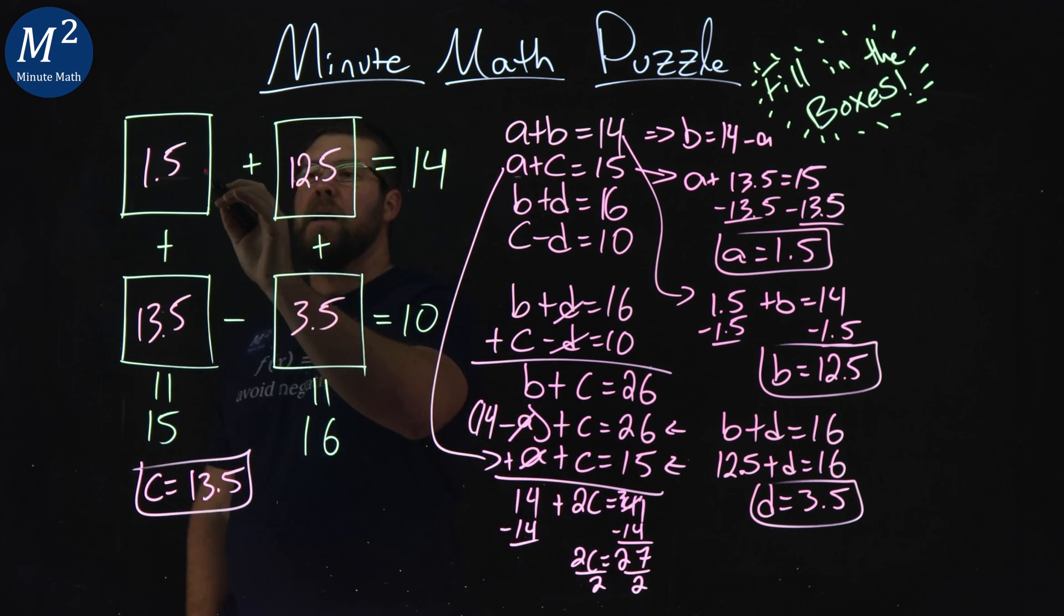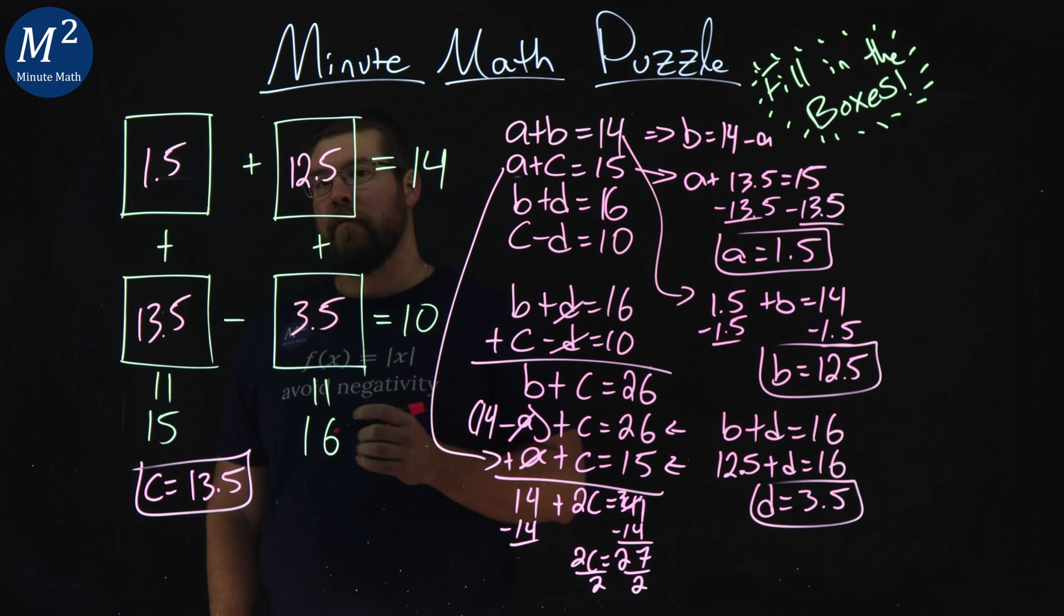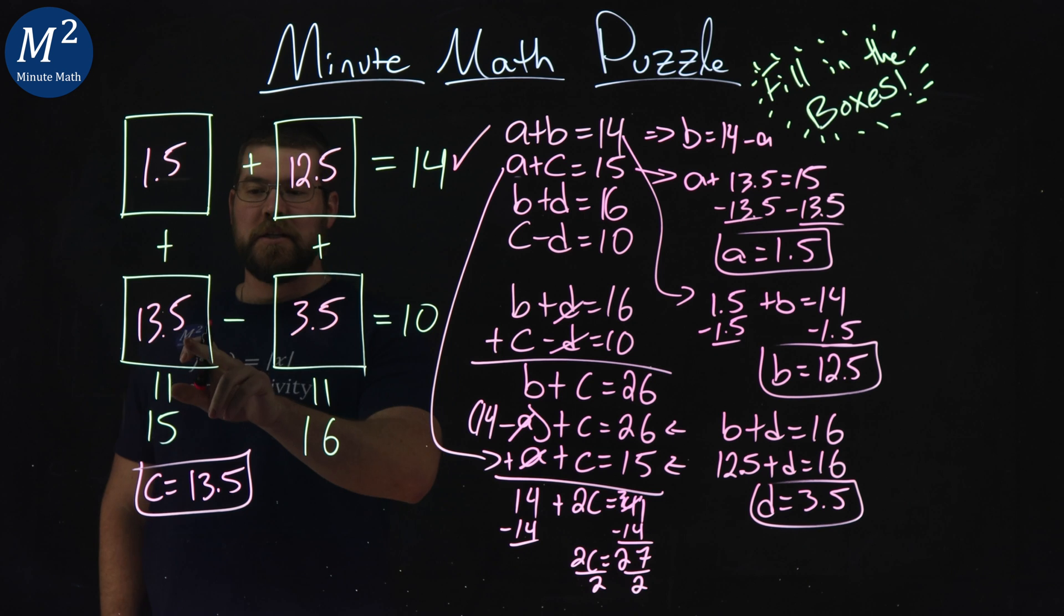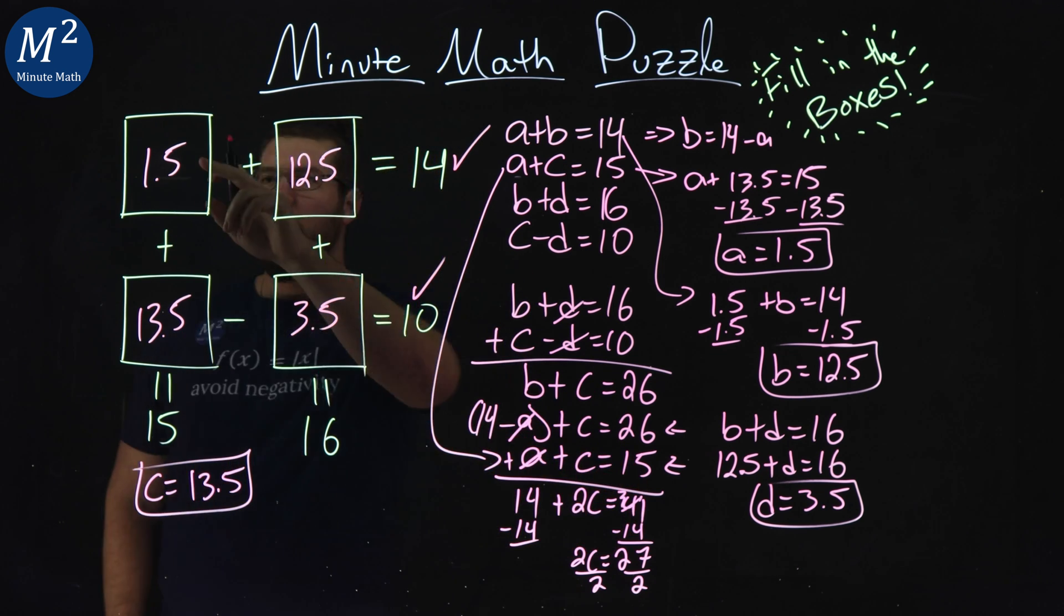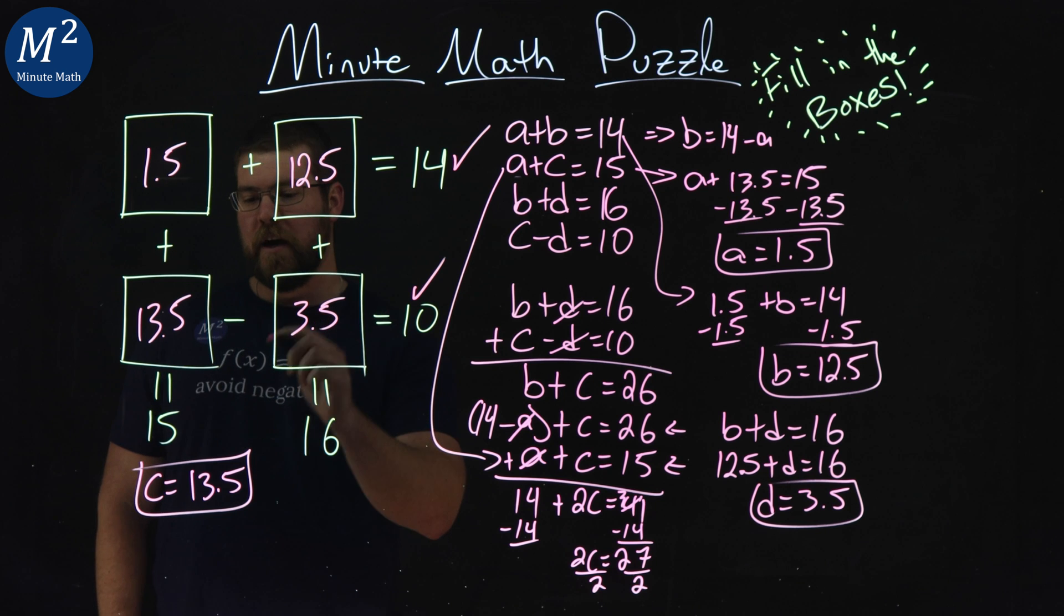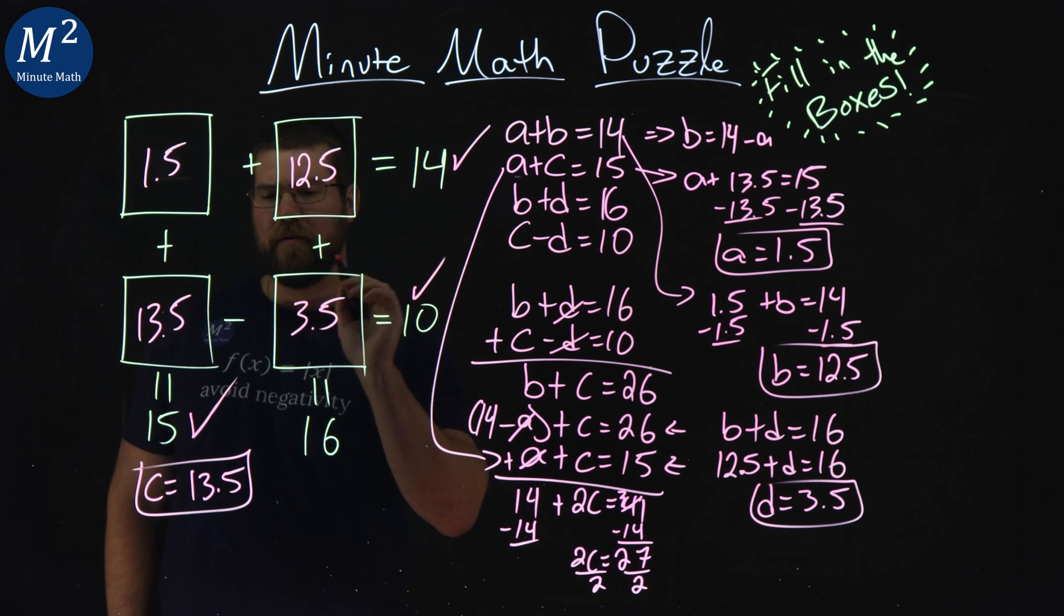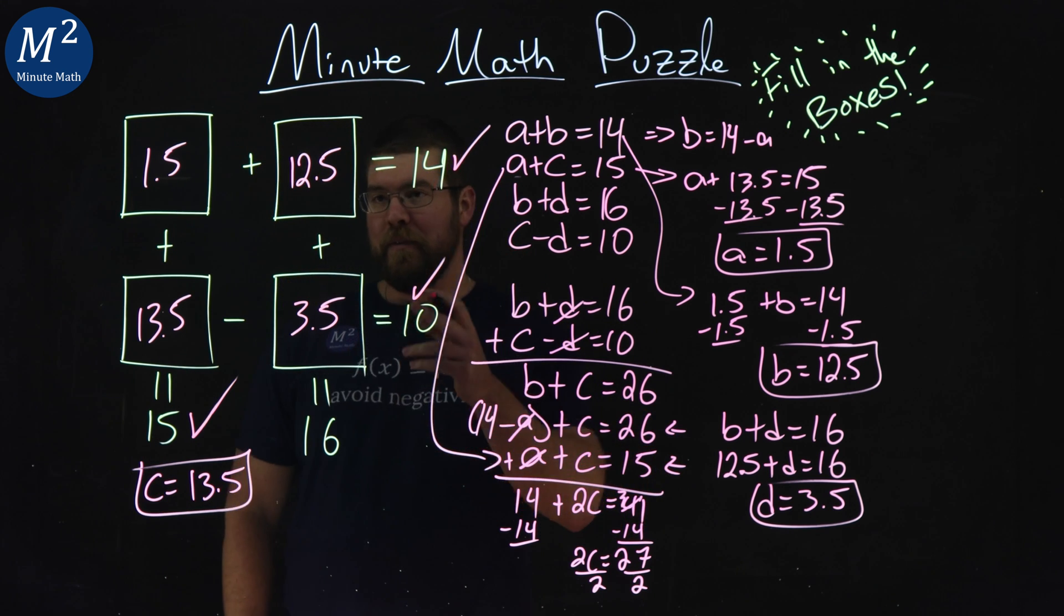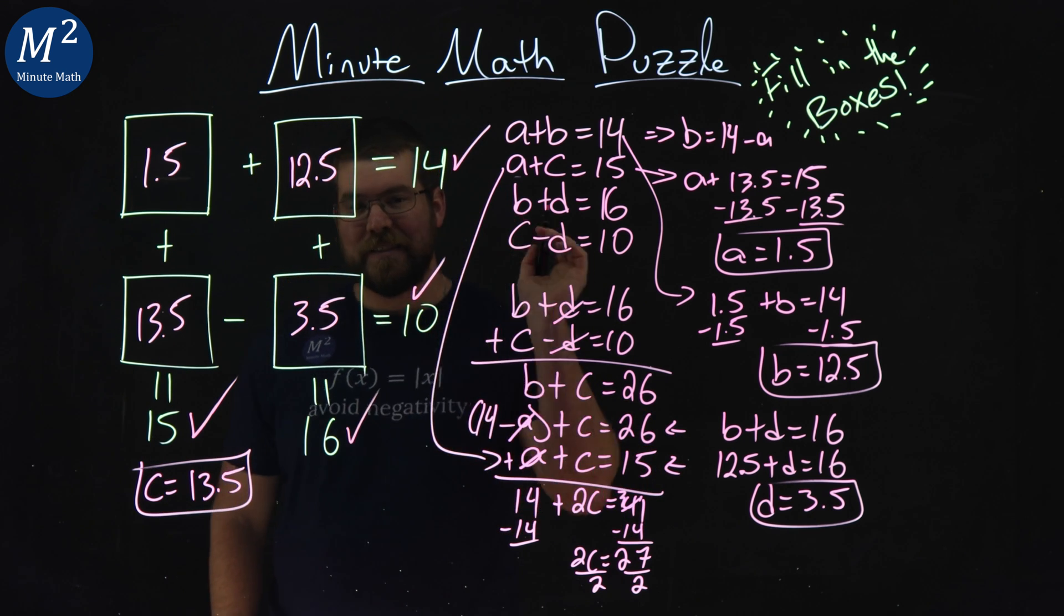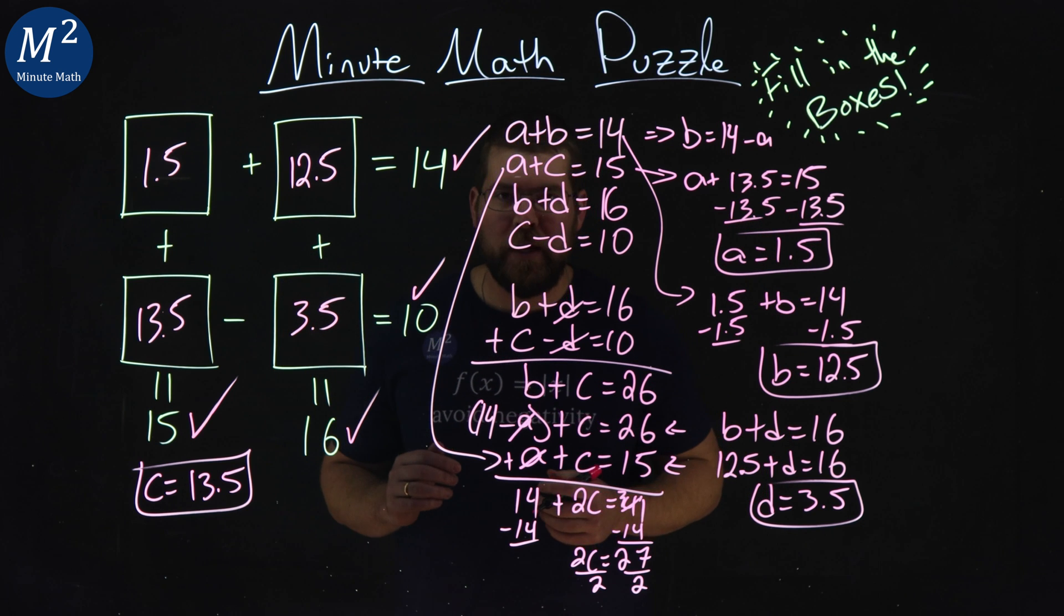Let's check and see if this worked here. 1.5 plus 12.5, that gives me 14. We're good. 13.5 minus 3.5 is 10. 1.5 plus 13.5 is 15. Good old check mark. And last but not least, 12.5 plus 3.5 does in fact give me 16, and we got our answer right here.